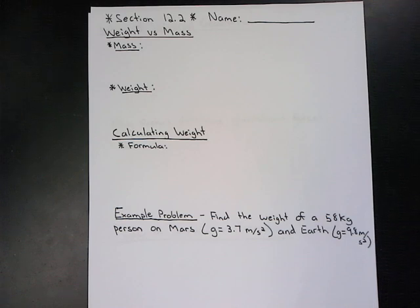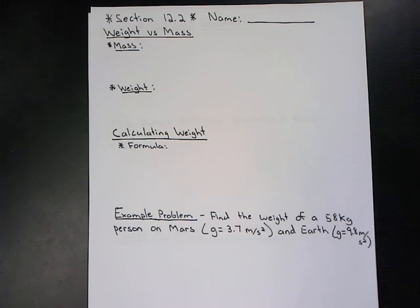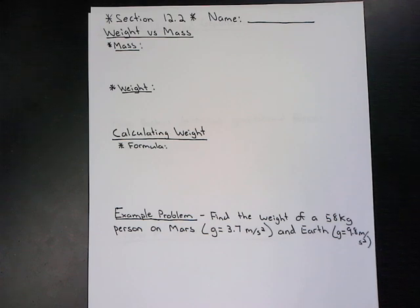For section 12.2, you should be able to determine how weight and mass are related. You should be able to know why objects fall to the ground when dropped. You should be able to determine what the relationship between free fall, acceleration, and mass is. And the final objective is you should know why a projectile follows a curved path.